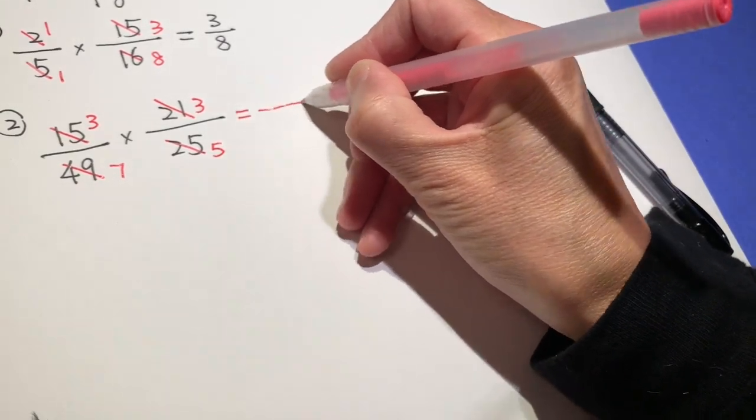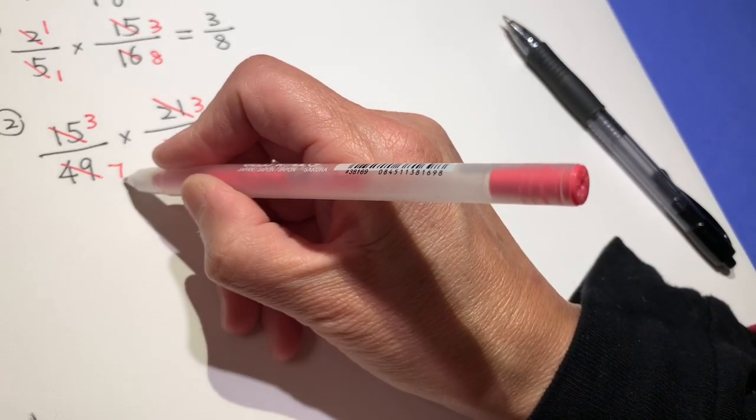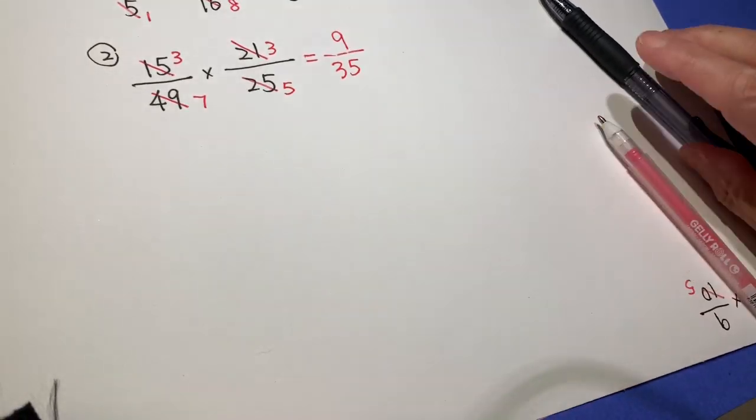So the result is 3 times 3, 9. 7 times 5, 35. And that is it.